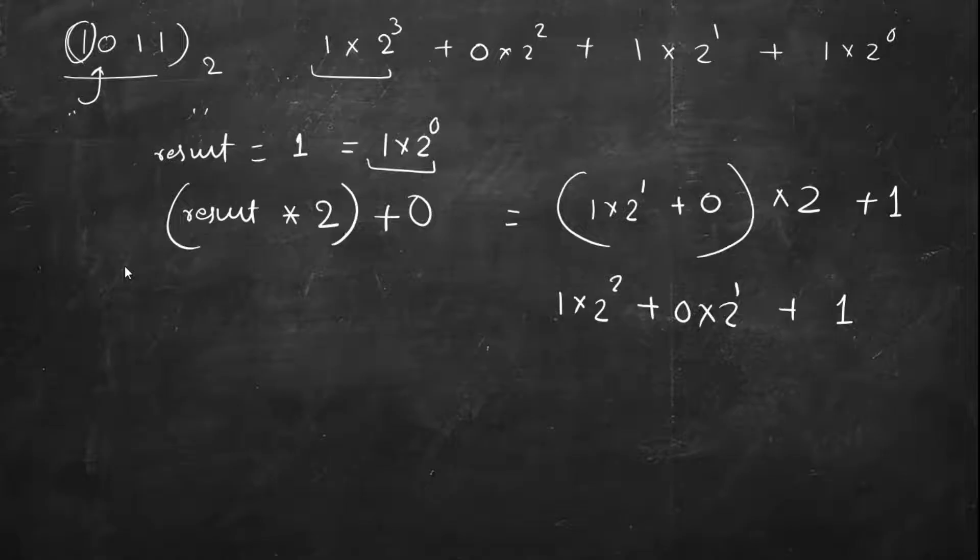So we are making progress. Earlier this bit was here, we shifted it left so the power increased by 1. Like this one, we again shifted, power increased by 2, and then 0 comes here and then 1 comes here. Again do the same thing.